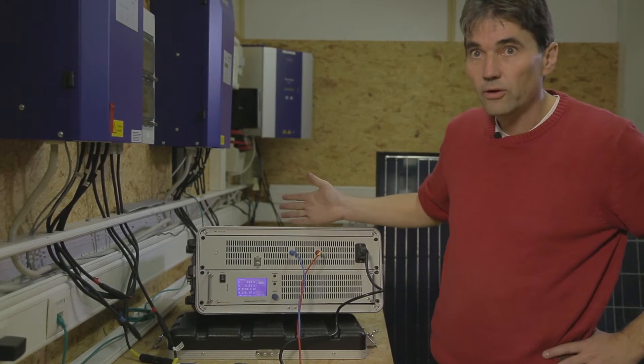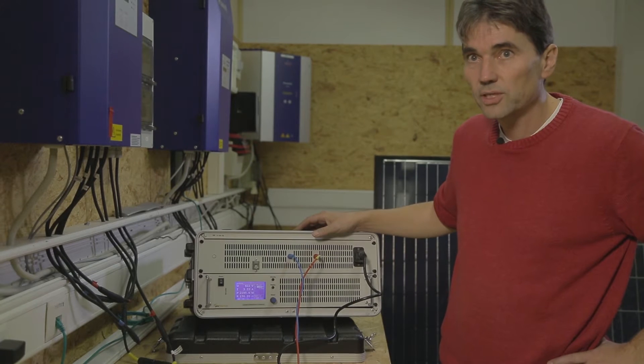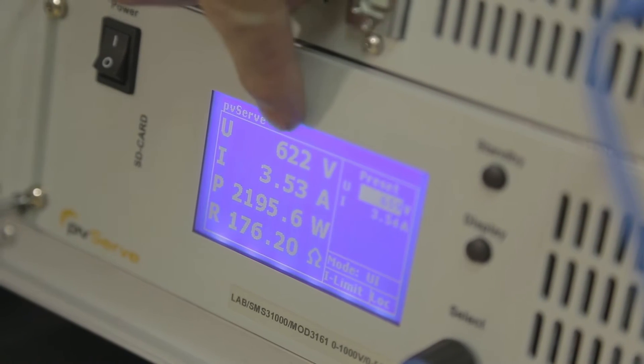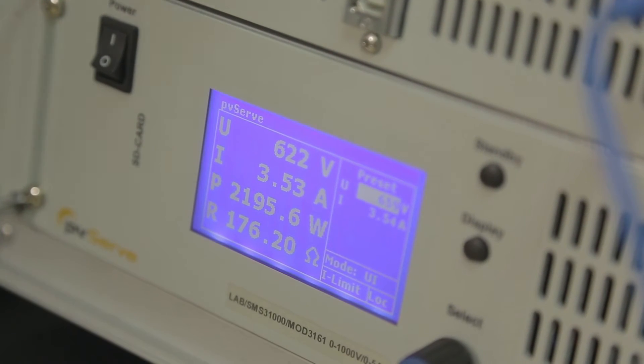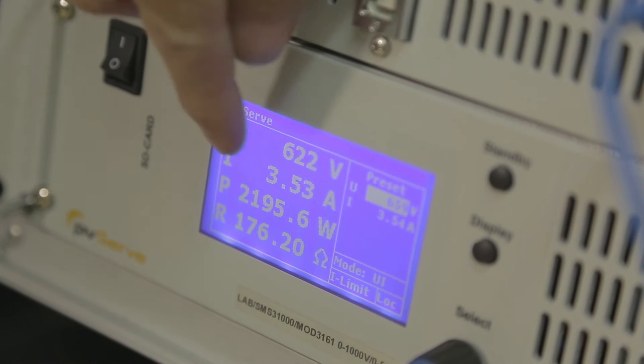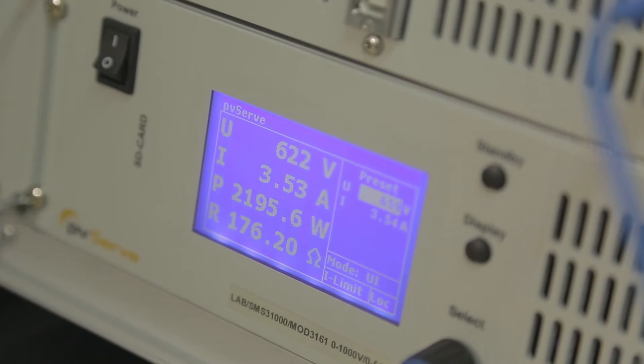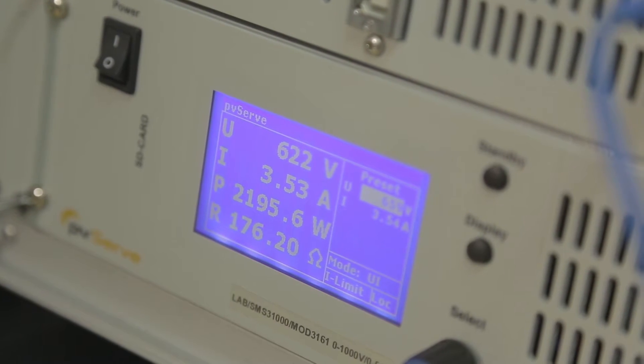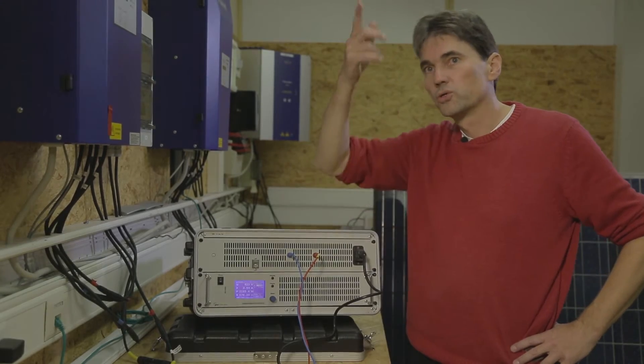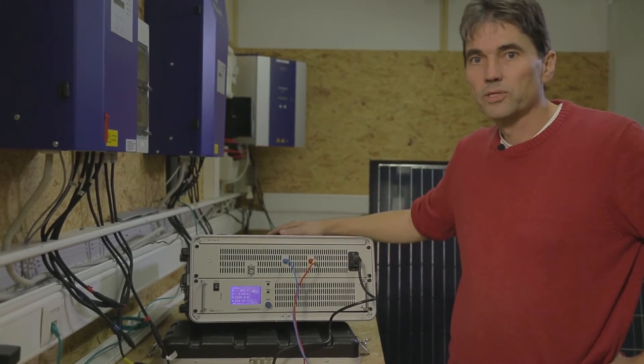The sound of the fan tells you that the device is in operation. Here, you can see 622 volts, the voltage needed to send current back through the solar generator at 3.53 amps, which you can see here. That allows us to conduct these investigations on a roof.